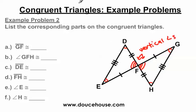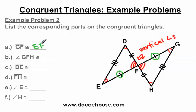Let's solve these problems. Line segment GF: I'm going to look at the tick marks. GF — G has two arcs, E has two arcs, so G and E go together. And then we have angle F matching angle F. So line segment GF is congruent to line segment EF.